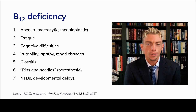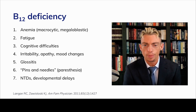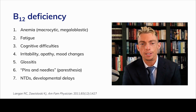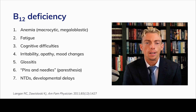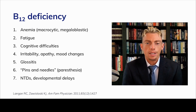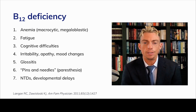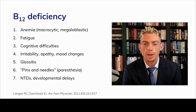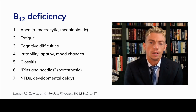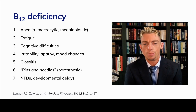Clinical presentation of B12 deficiency varies widely. Patients with overt deficiency usually present with macrocytic anemia with a mean corpuscular volume greater than 100, with or without neurological disturbances. Fatigue is common due to reduced mitochondrial ATP synthesis. Irritability, apathy, and mood changes are also common. Advanced deficiency can cause glossitis — inflammation of the tongue — and paresthesia, a burning or prickling sensation in the extremities. Neural tube defects and developmental delays are a more severe consequence in women of childbearing age.